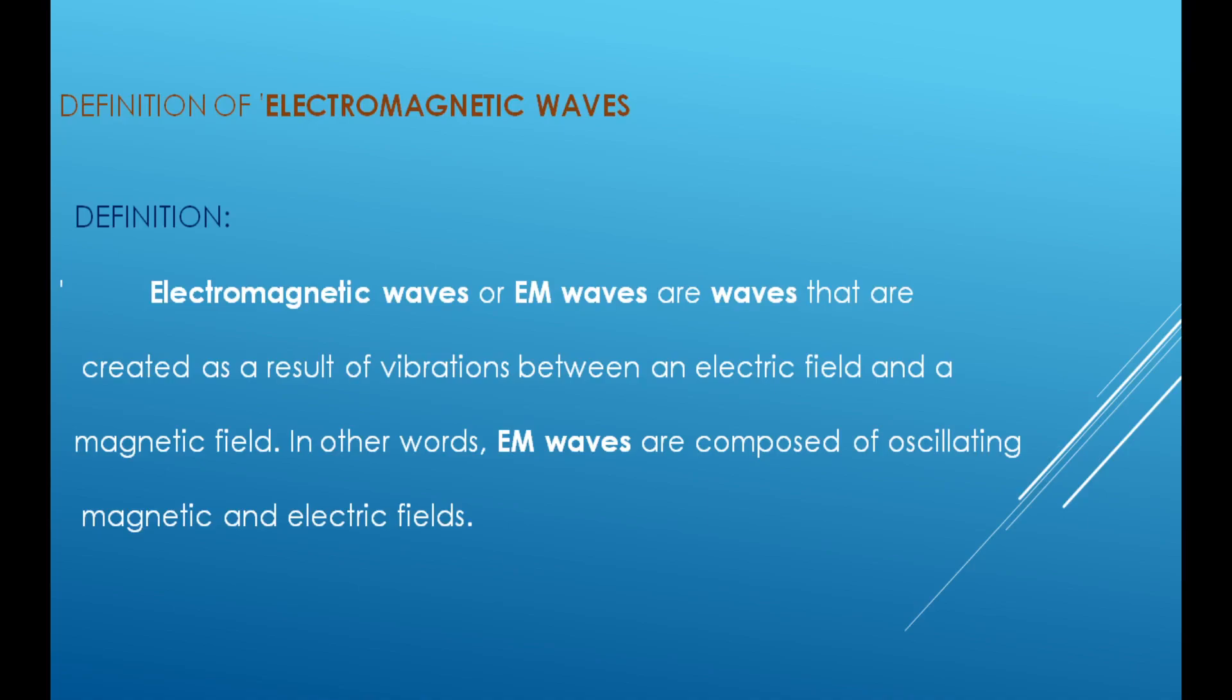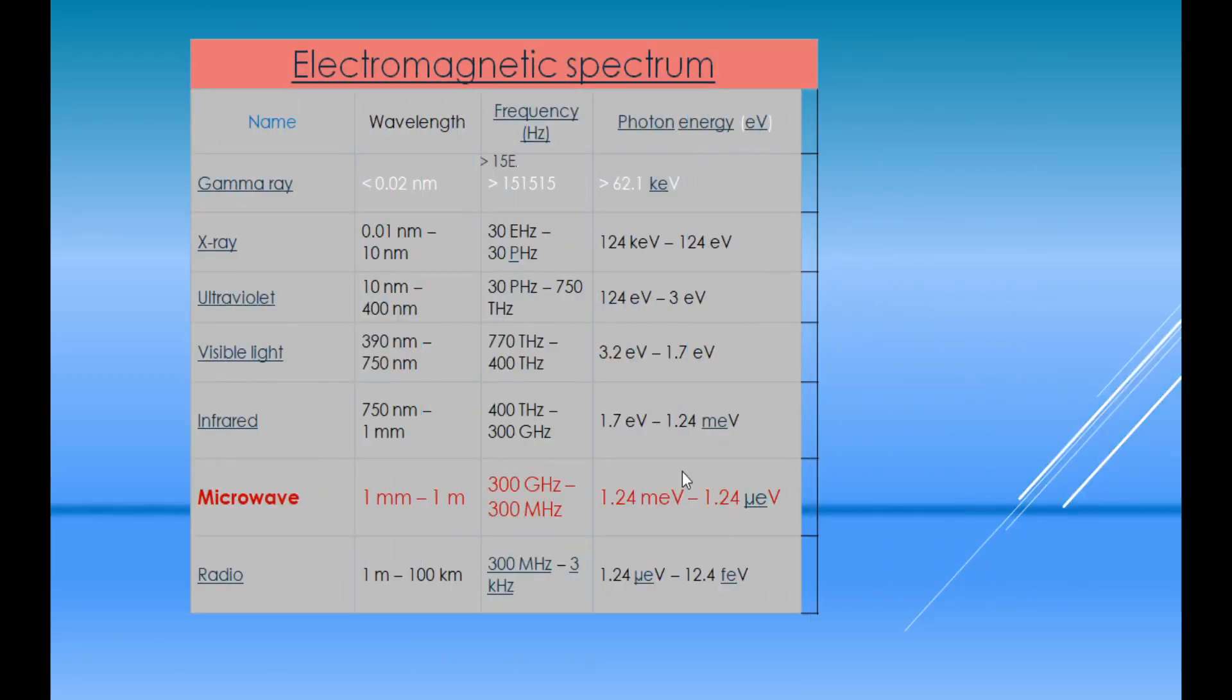Electromagnetic waves have different wavelengths and different frequencies. With different wavelengths and frequencies, we can divide them into seven regions. The seven regions are gamma ray, x-ray, ultraviolet, visible, infrared, microwave and radio waves.